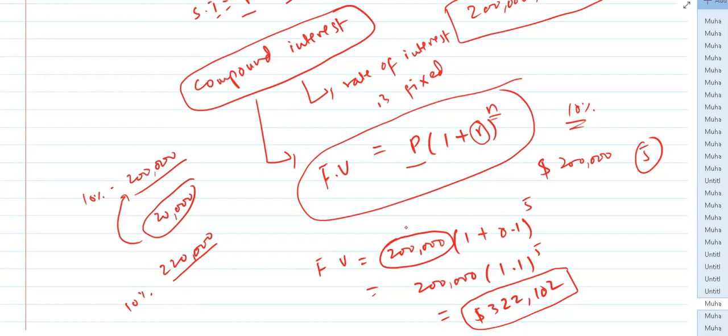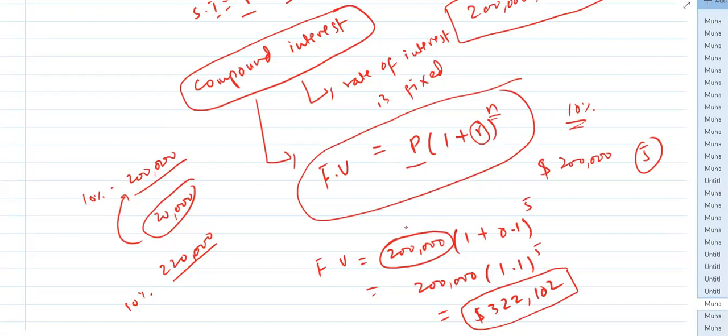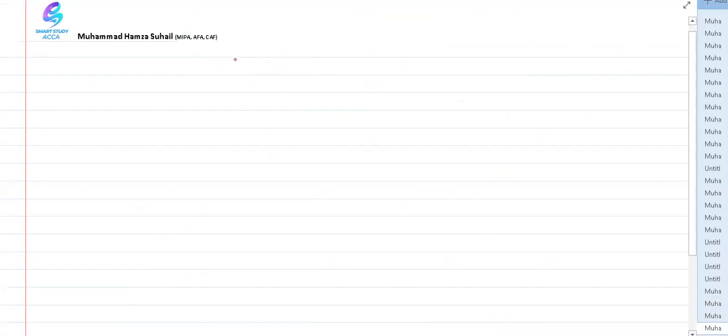If I invest today, cash outflows occur in the present year, and returns will be received in future periods. Before making an investment, I need to estimate the future value of the investment made today, and I also need to convert those future cash flows into their present value to find their equivalent amount today. This is the concept of the time value of money.